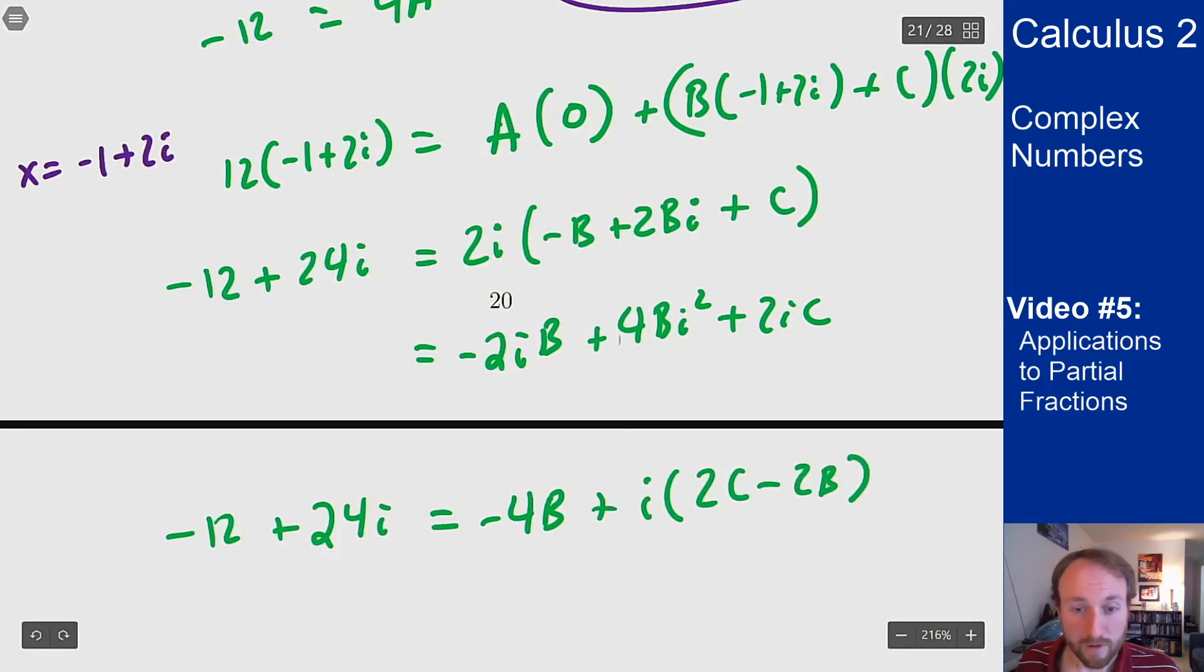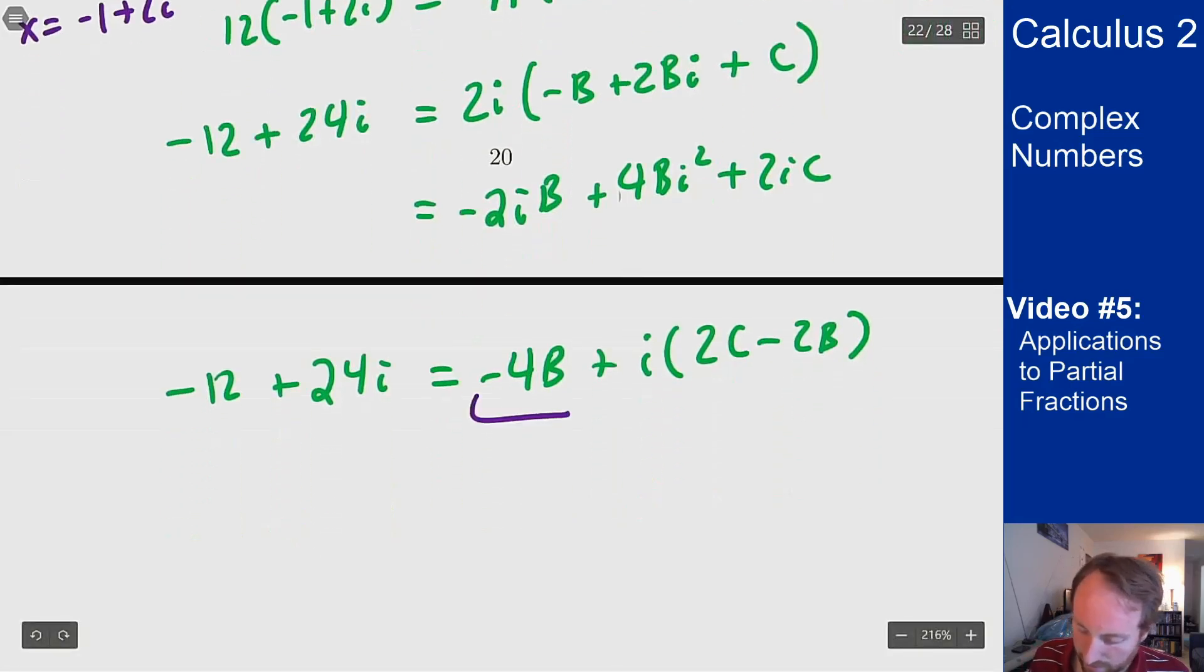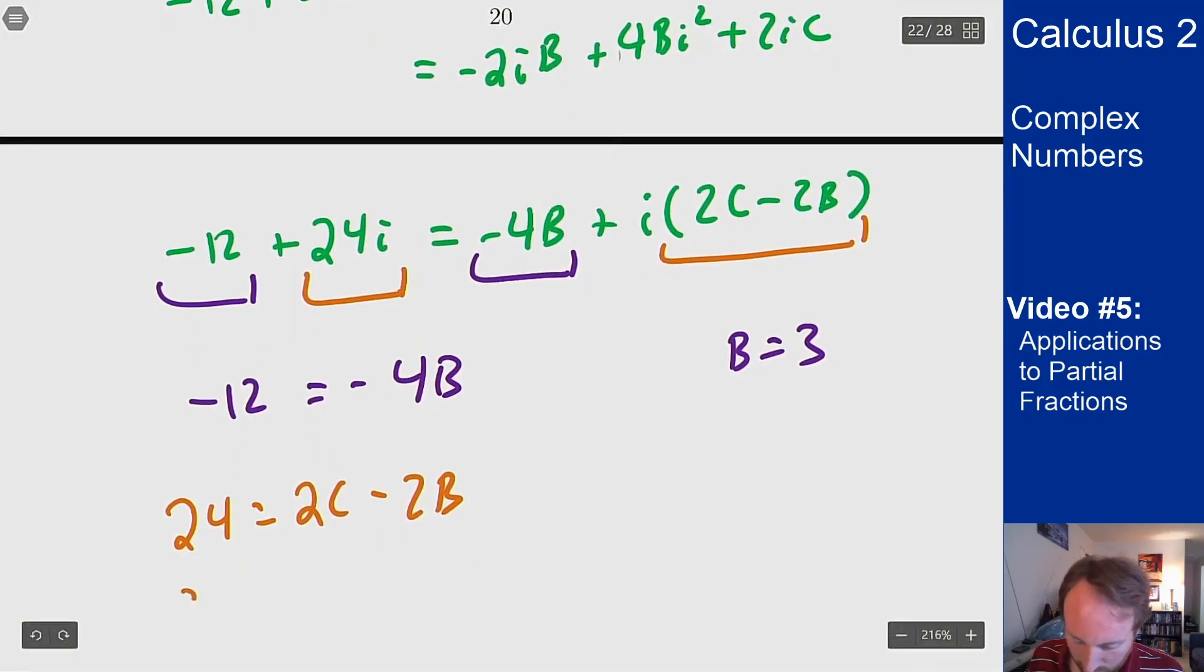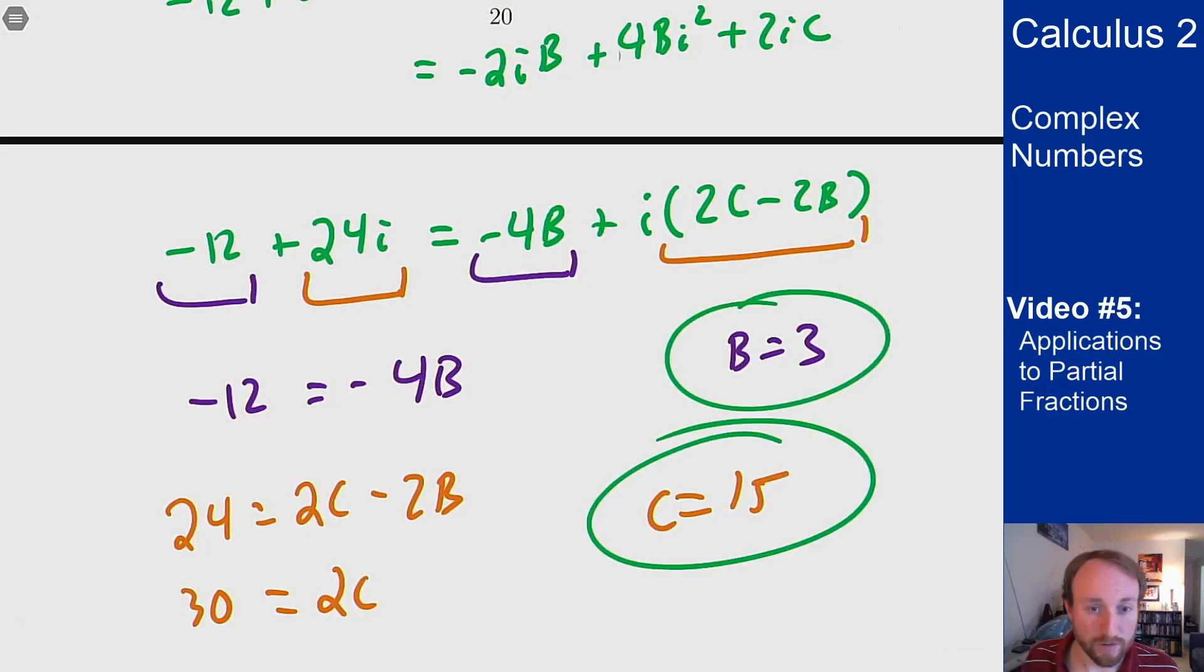And now from this I get two equations using the real part and the imaginary part. So the real part here tells me that -12 equals -4B which is going to give me that B equals 3 and the imaginary part tells me that 24 is 2C-2B. Well I know B is 3 so 2B is 6 so 30 equals 2C which means that C equals 15. So right from there I have my three coefficients.